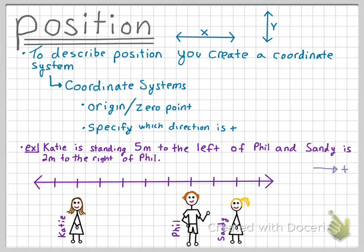Now let's assume that Phil is at the origin. This means that Sandy is going to be at point 2, and Katie is going to be at point negative 5. These numbers that we have placed on our coordinate system are different, but they still show the same distance between the three different people.